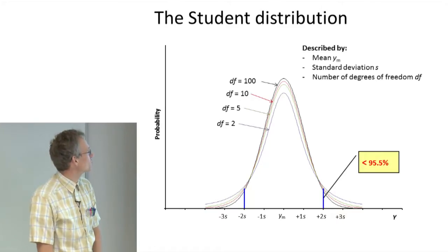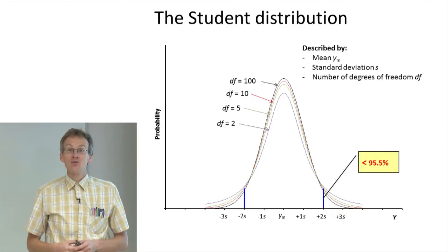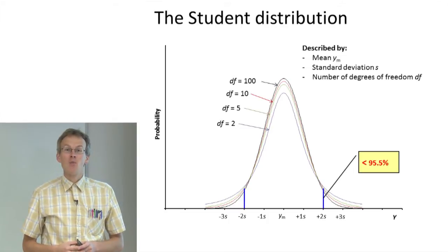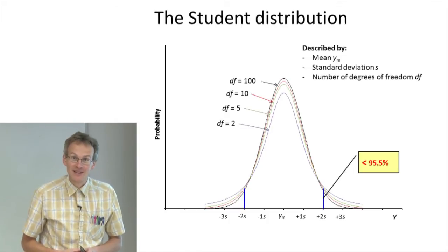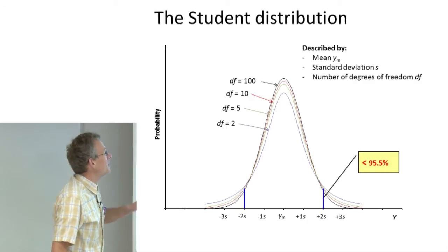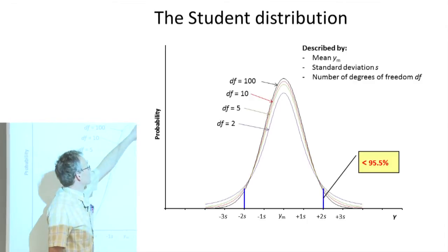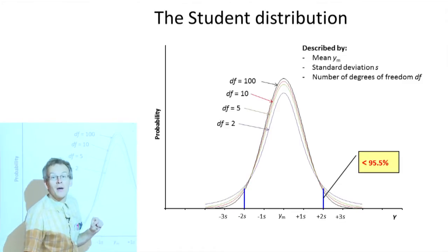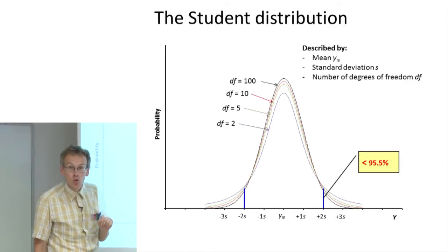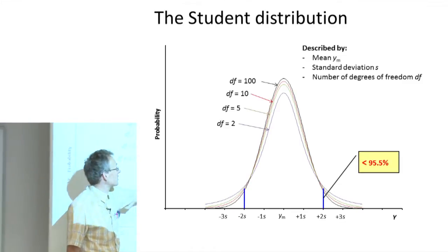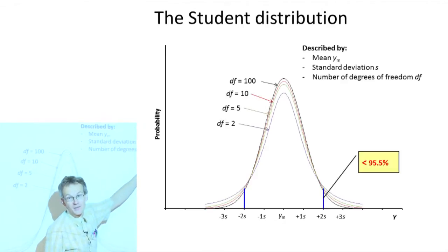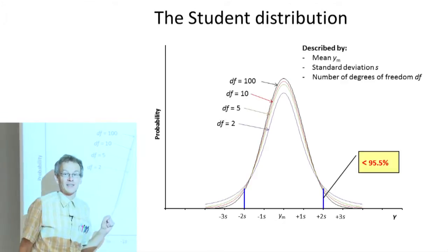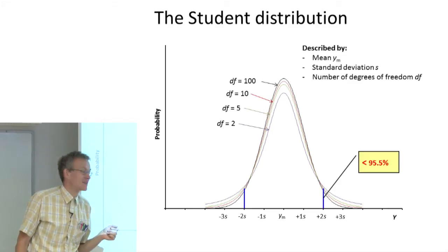Let us now examine one more distribution function, the T or so-called Student distribution. The Student distribution is somewhat similar to the normal distribution in that it is also characterized by a mean value and the standard deviation, but in addition to these two it is also characterized by the number of degrees of freedom, which makes it different from the normal distribution function.